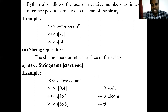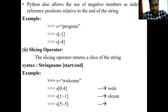Python also allows the use of negative numbers as indexes, related to the end of the string. In other languages, we use only positive numbers as index. But in Python, we can also use negative numbers. So how to use negative numbers as an index? For example, s = 'welcome'. Using s[-1] — it takes the index from right to left. Positive indexing goes left to right, but negative indexing goes right to left.